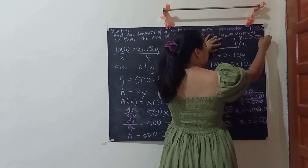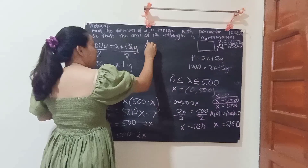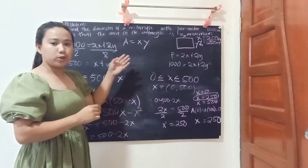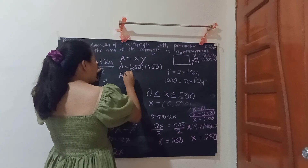Thus, we can solve for the maximum area: A equals x times y. Substituting with a side length of 250 meters: A equals 250 meters times 250 meters, giving 62,500 square meters.